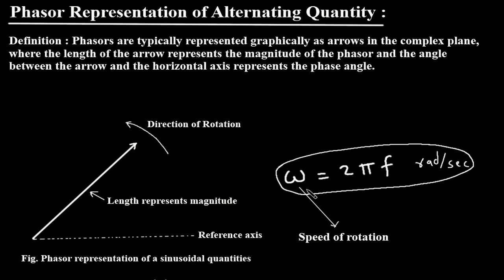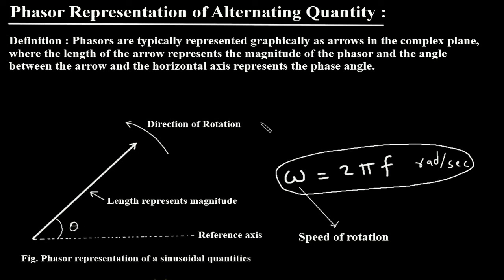The speed of rotation is omega, and it is equal to 2 pi f. Its unit is radian per second. The direction of rotation is counterclockwise. Phasors are similar to vectors, but it is a rotating vector, and it rotates in counterclockwise or anticlockwise direction. The horizontal axis is a reference axis, and the angle between the reference axis and the arrow is the phase angle, represented by theta.